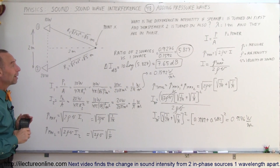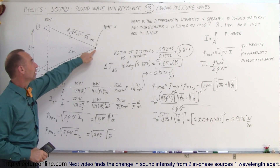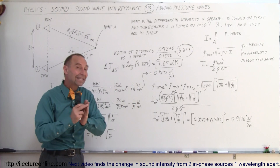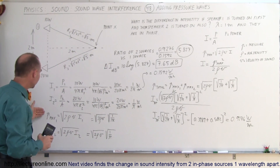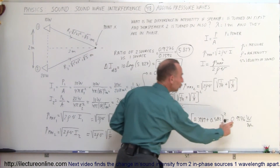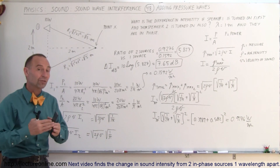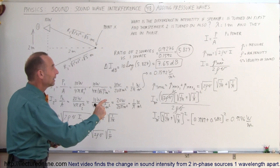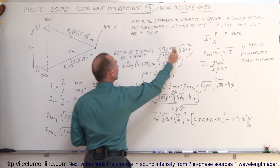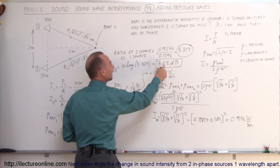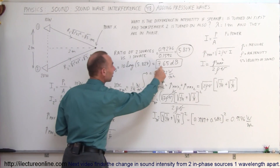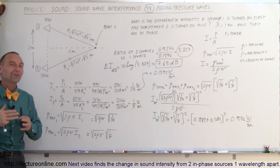So now we have the answer. The way we solved the problem: we found the intensity at this location for each individual source — the first source gave 0.1592 watts per square meter. We couldn't just add the intensities; we had to add the pressures of the waves. We calculated the maximum pressure for each wave, added them together, then reconverted back to intensity, giving 0.9276 watts per square meter due to constructive interference. Taking the ratio and converting to decibels gives a difference of 7.65 decibels — that's how much the sound intensity increases when the second speaker is turned on.